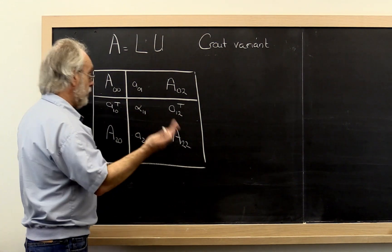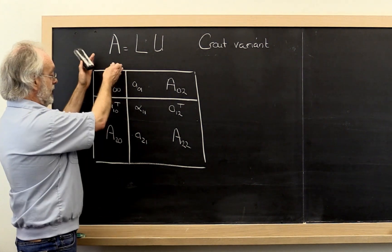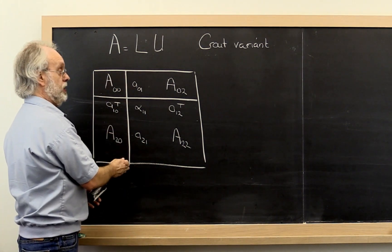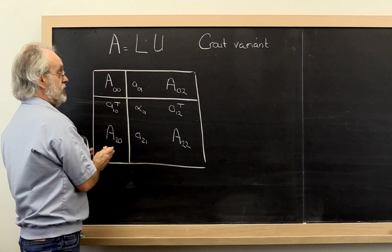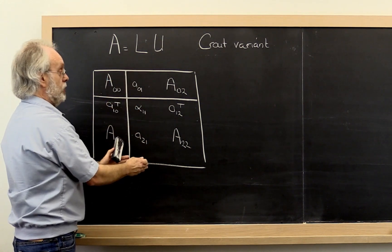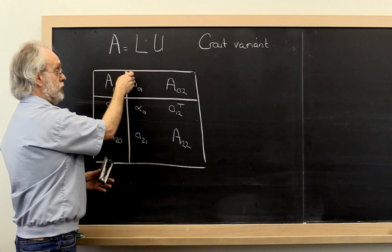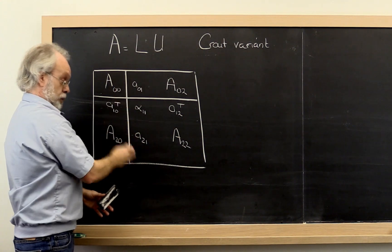We also saw the left-looking algorithm which had the property that everything up to this point was completely finished. And in the current step we wanted to move forward and also compute the appropriate parts of U and L for the next column.